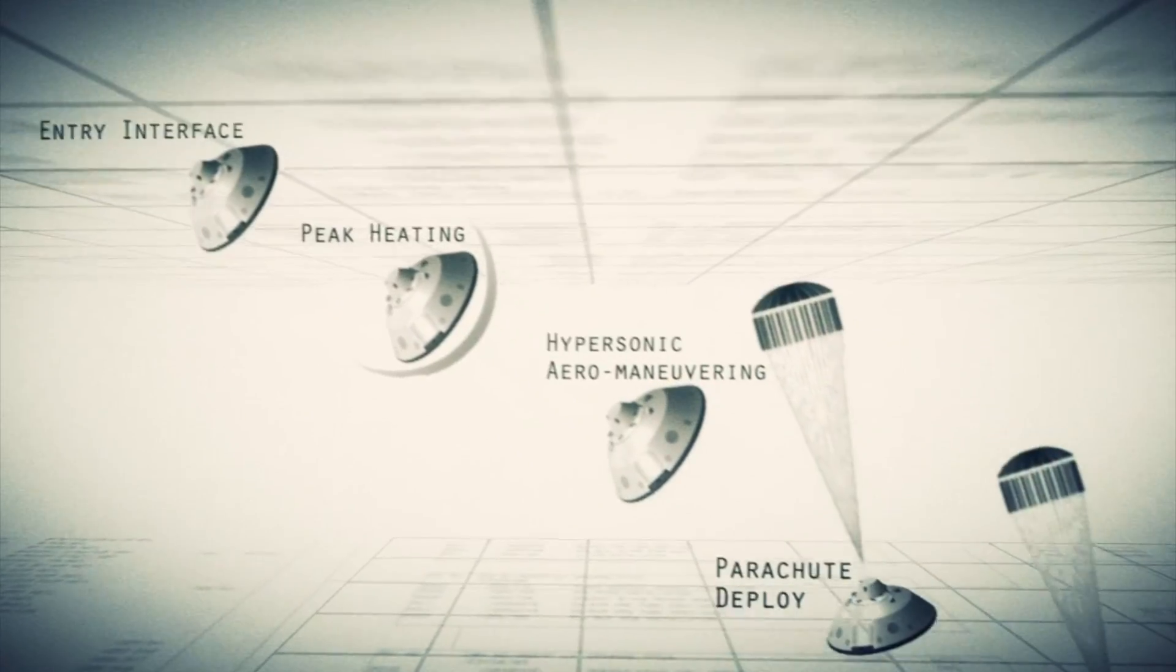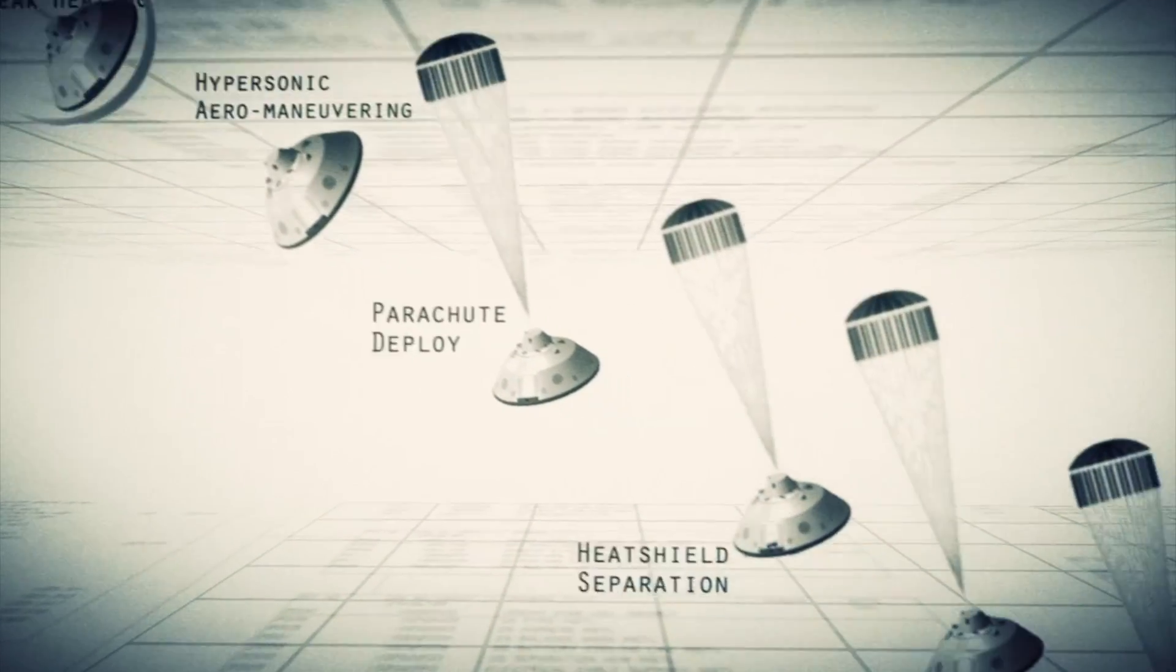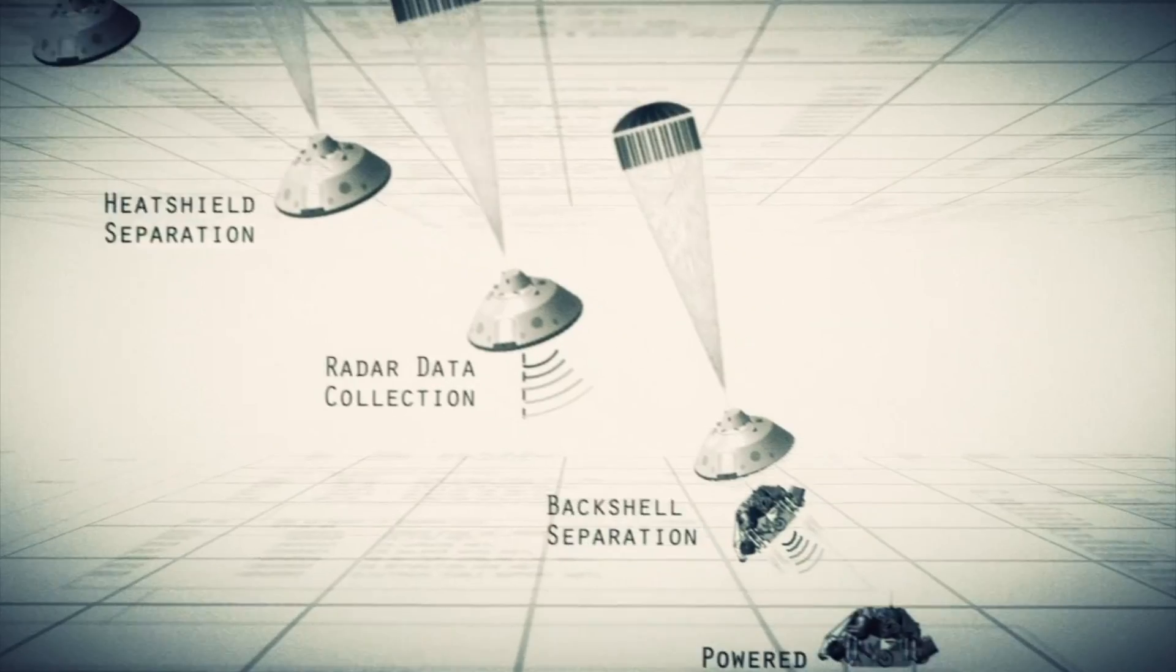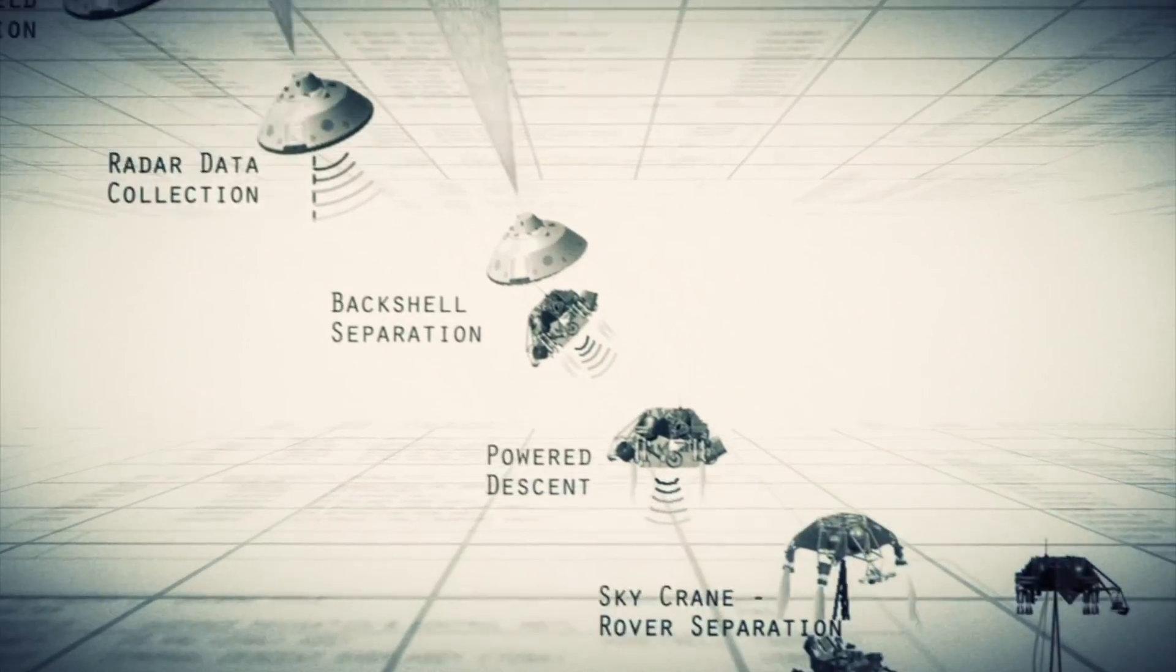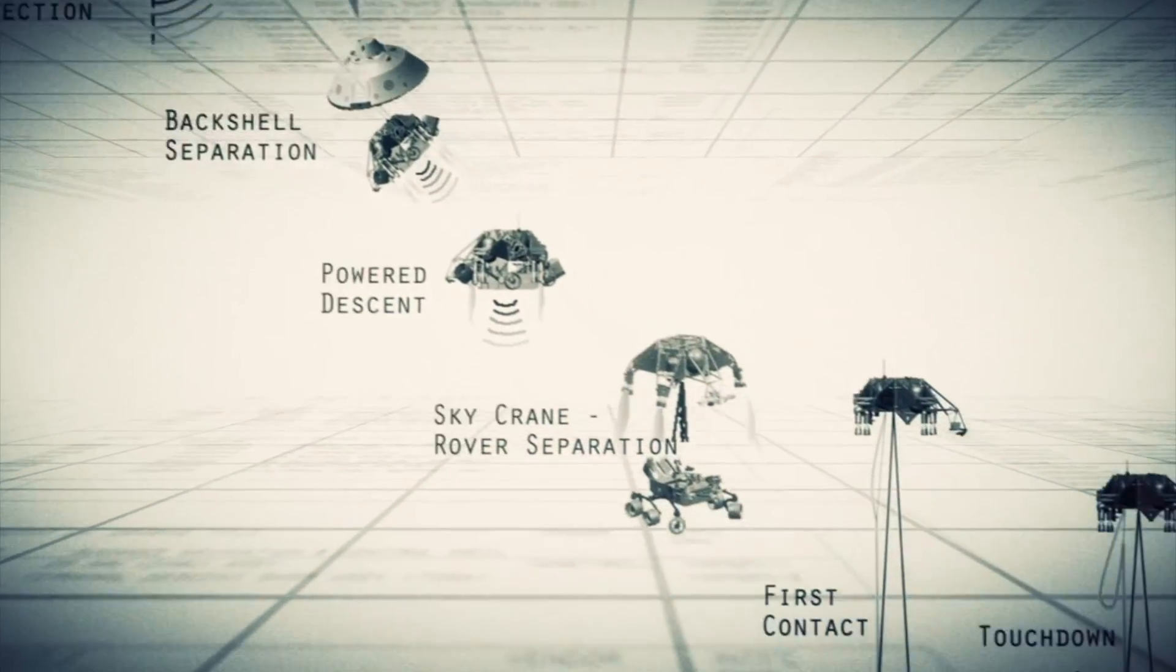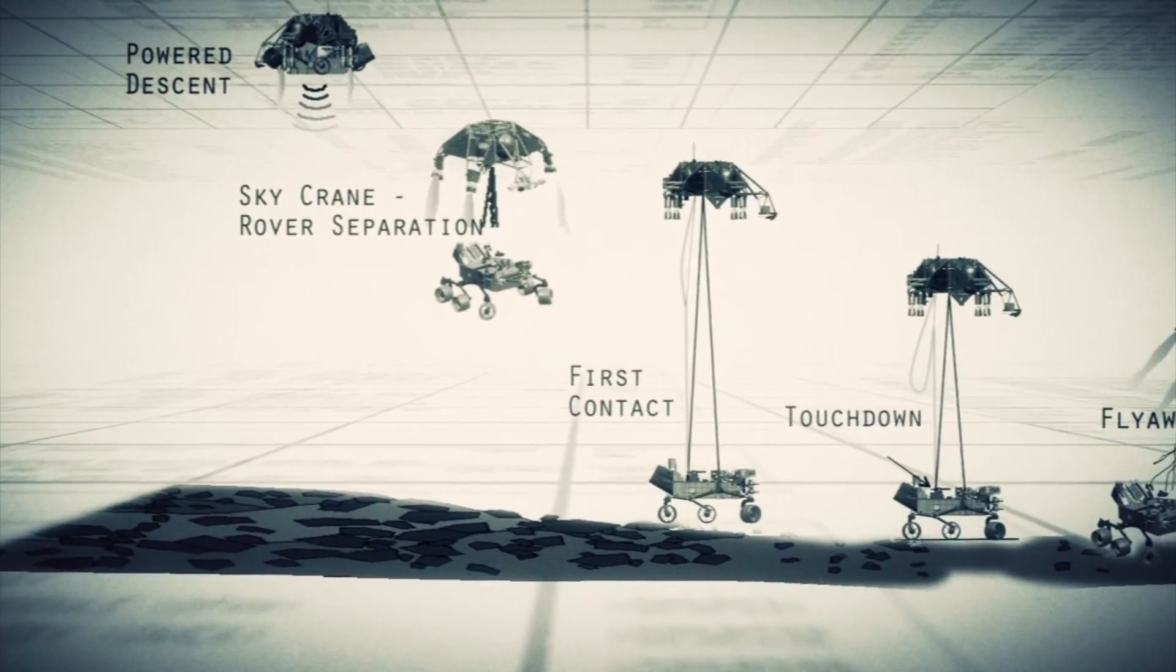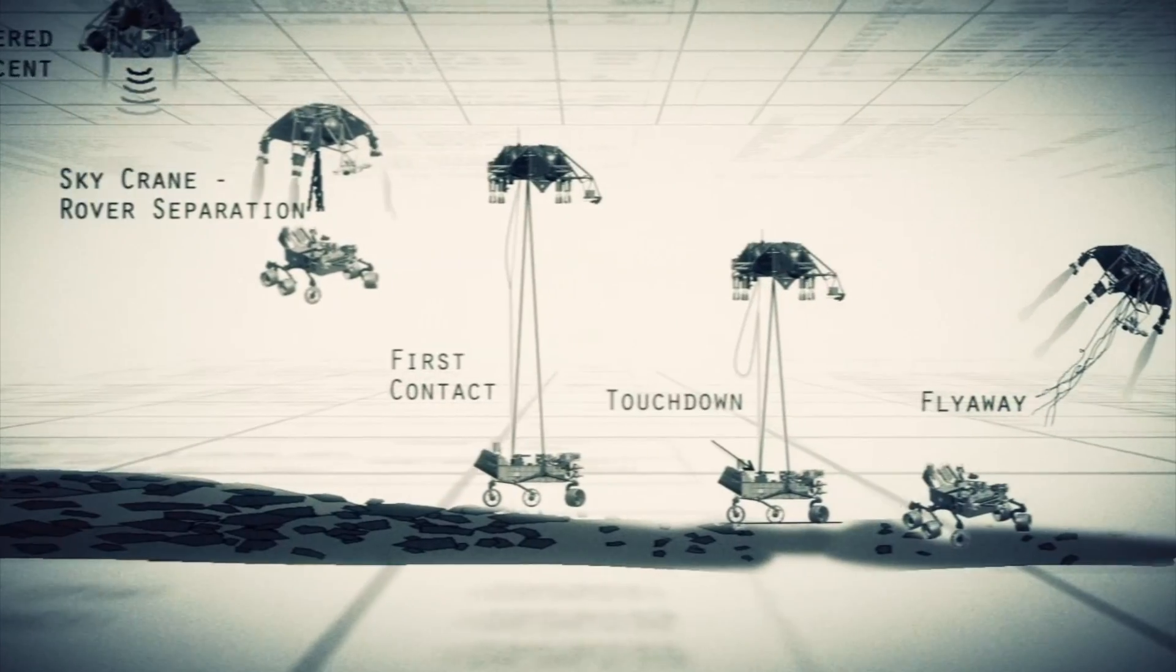Entry, descent, and landing, also known as EDL, is referred to as the seven minutes of terror, because we've got literally seven minutes to get from the top of the atmosphere to the surface of Mars, going from 13,000 miles an hour to zero in perfect sequence, perfect choreography, perfect timing, and the computer has to do it all by itself with no help from the ground. If any one thing doesn't work just right, it's game over.